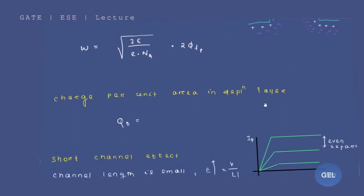The charge per unit area in the depletion layer — this is very important — is given as Qd = −√(2ε · q · NA · 2φFp), to the power of 1/2.